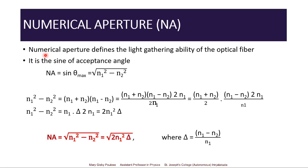Another parameter defined for the optical fiber is its numerical aperture, NA. It defines the light-gathering ability of the optical fiber. It is the sine of the acceptance angle — that is, NA = sin θmax. Hence NA = √(n1² − n2²).